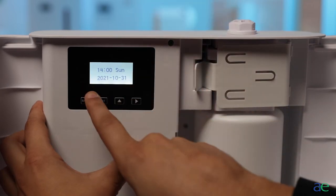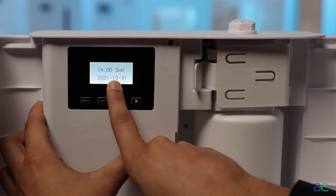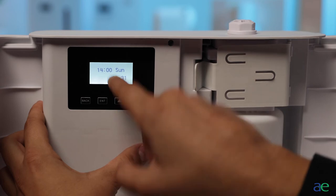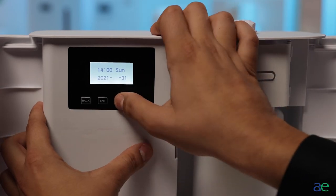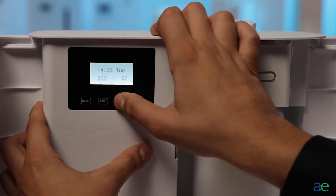The date is as follows: first the year, then the month, then the day. Once you have reached the desired date on your diffuser, press enter to save your settings.